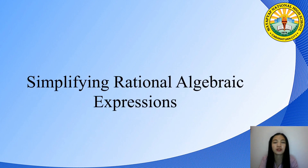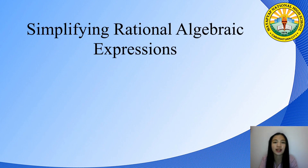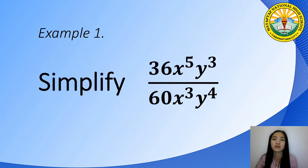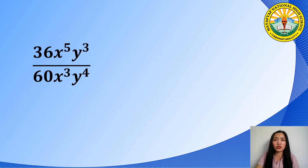Now, let us proceed to simplifying Rational Algebraic Expressions. In simplifying, we have to eliminate all the factors that are common in both the numerator and the denominator. To accomplish this, we may use the different methods in factoring. For example, let us simplify 36x to the fifth power y to the third power over 60x to the third power y to the fourth power. To simplify the given expression, first, factor both the numerator and the denominator.